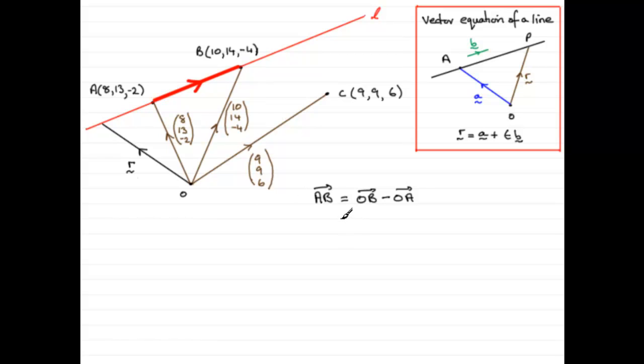Just got to fill this in now. What we've got is OB is 10, 14, minus 4, and then we have to subtract O to A, which is 8, 13, minus 2. And if we do that, what we end up with is 2, 1, minus 2. So, that's our vector AB.